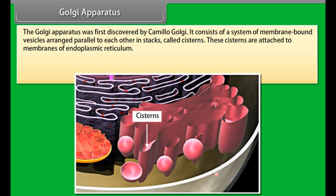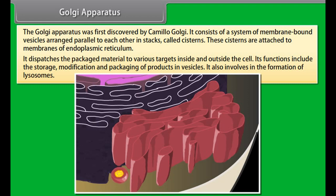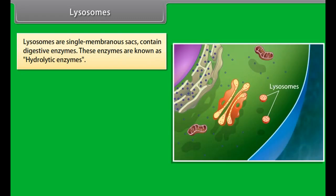Smooth endoplasmic reticulum (SER) does not contain any ribosome on its surface. The SER is helpful in the manufacturing of fat molecules or lipids, which is important for cell function. Some of these proteins and lipids help in building the cell membrane; this process is known as membrane biogenesis. It also plays a crucial role in detoxifying many poisons and drugs in the liver cells of vertebrates.